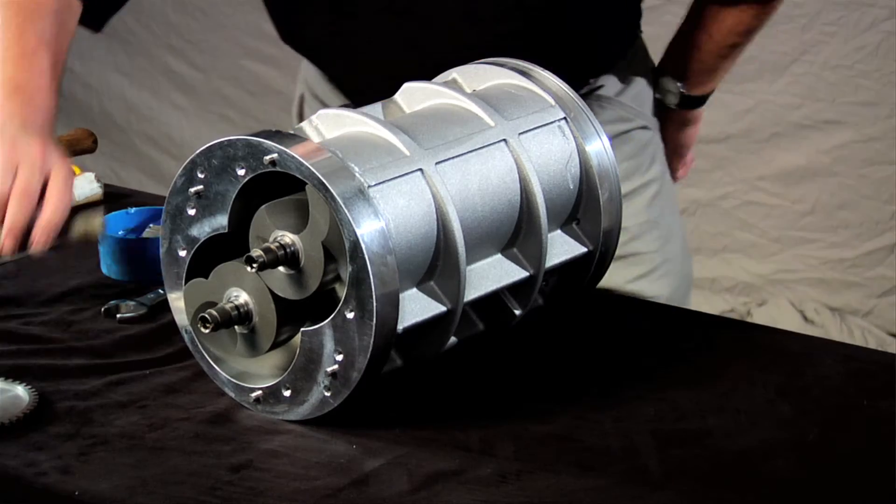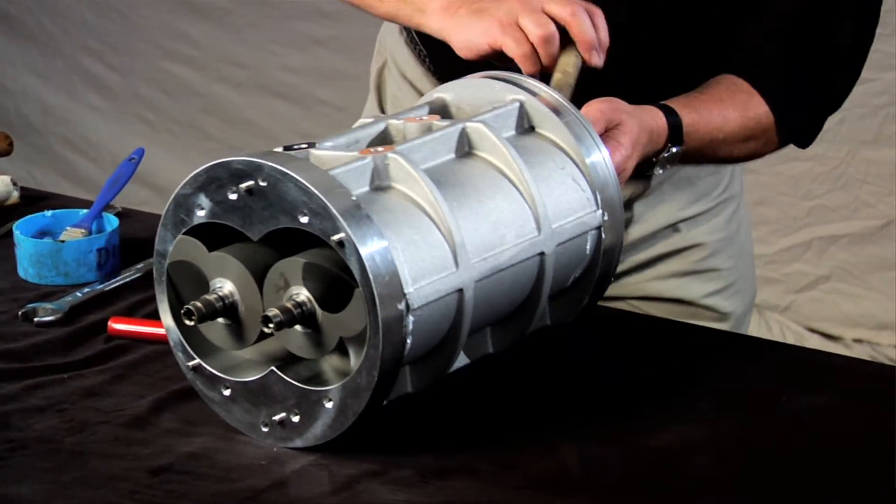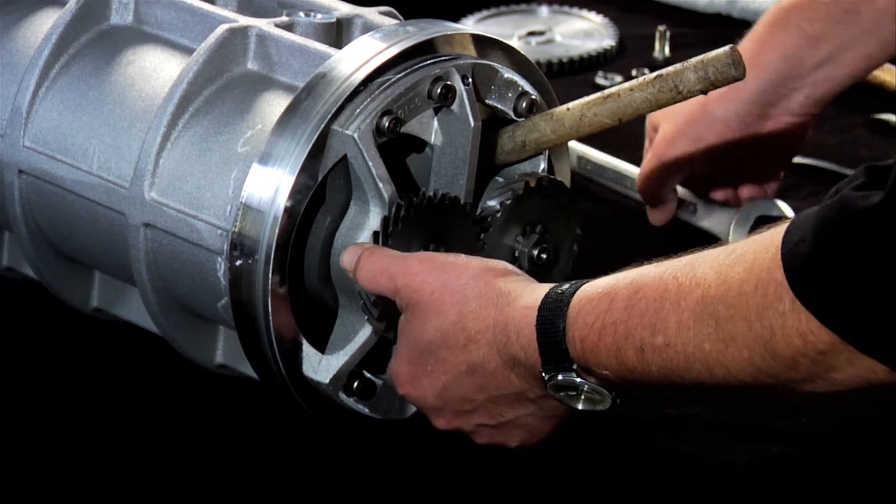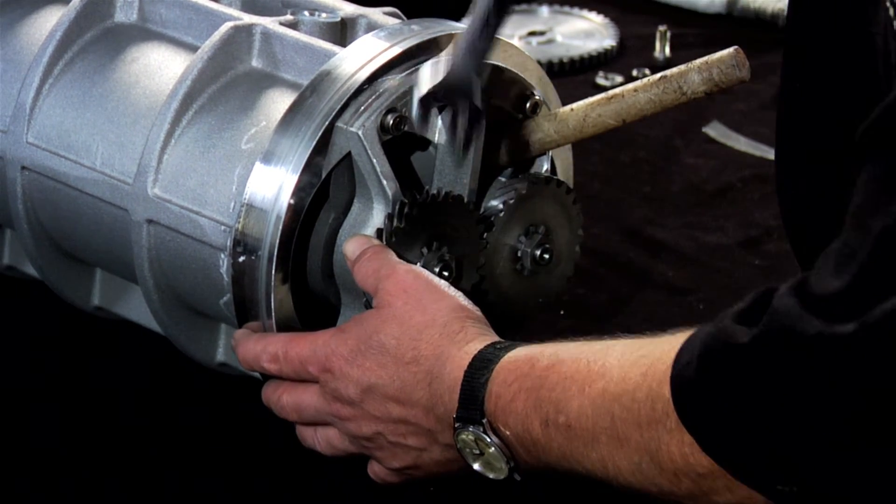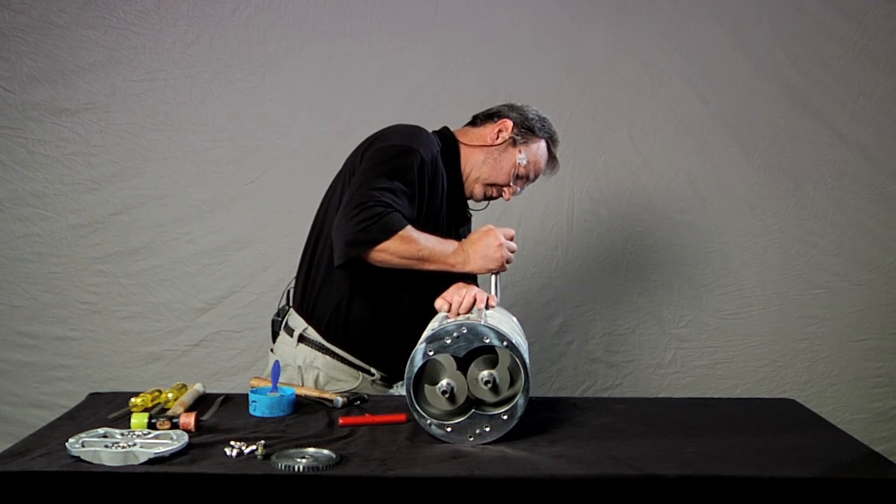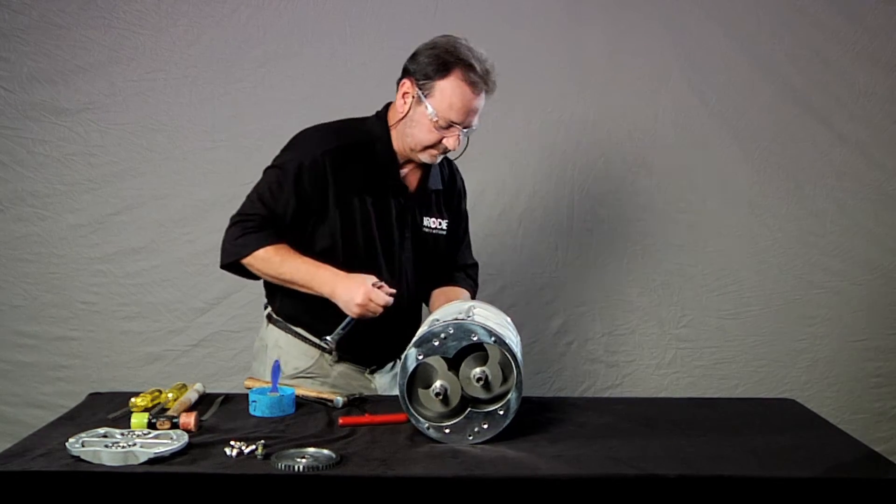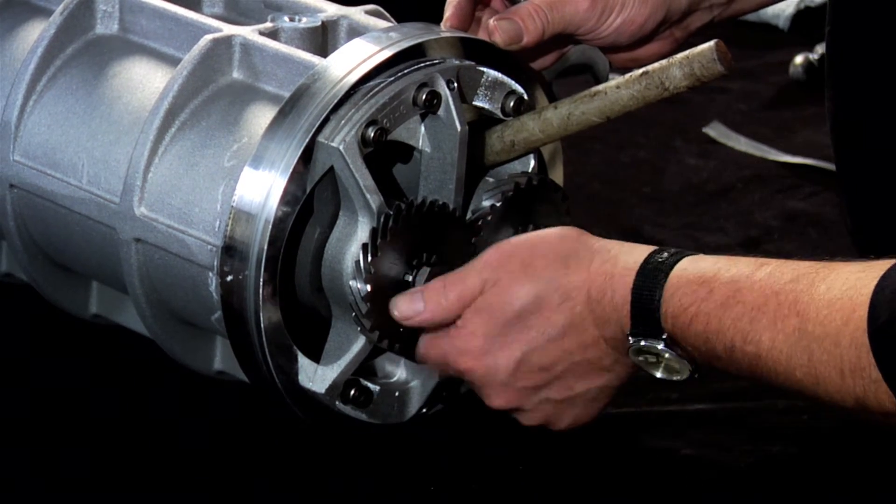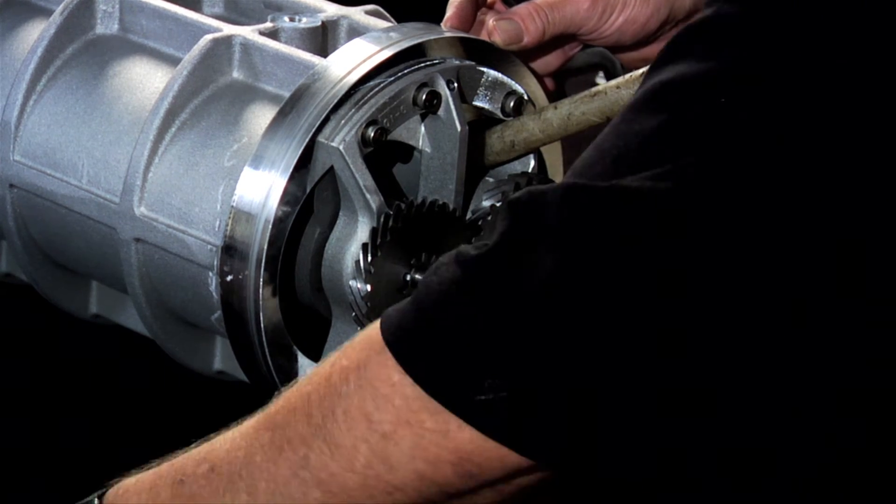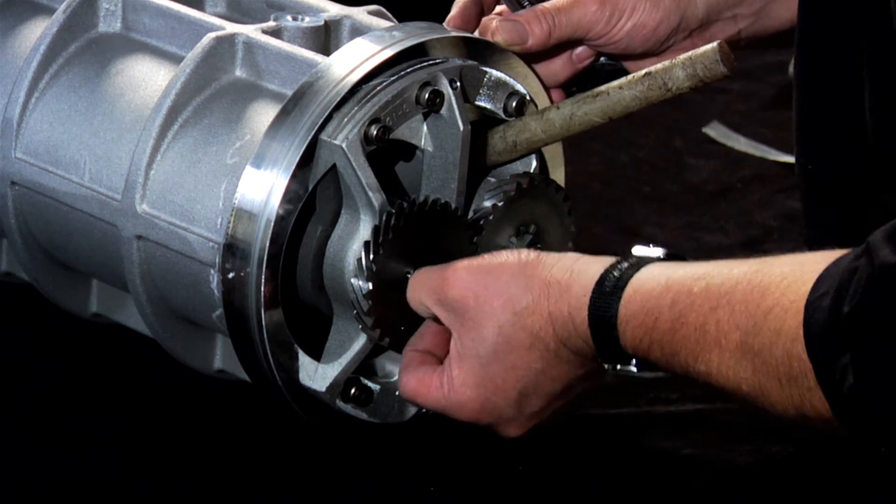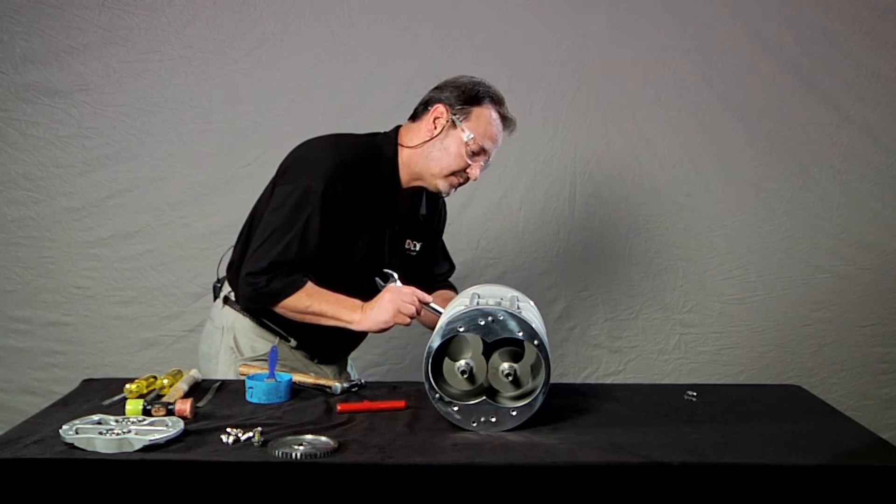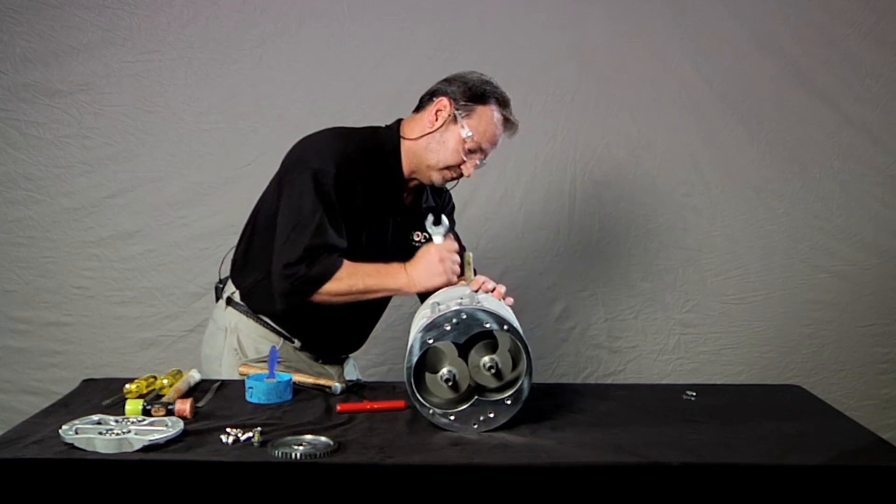On the opposite end of the measuring unit, you'll find the timing gears. Again, insert the blocking stick to stop the rotors from turning and loosen the lock nuts with the wrench. Remove the lock nuts and locking rings. Remove the locking stick.